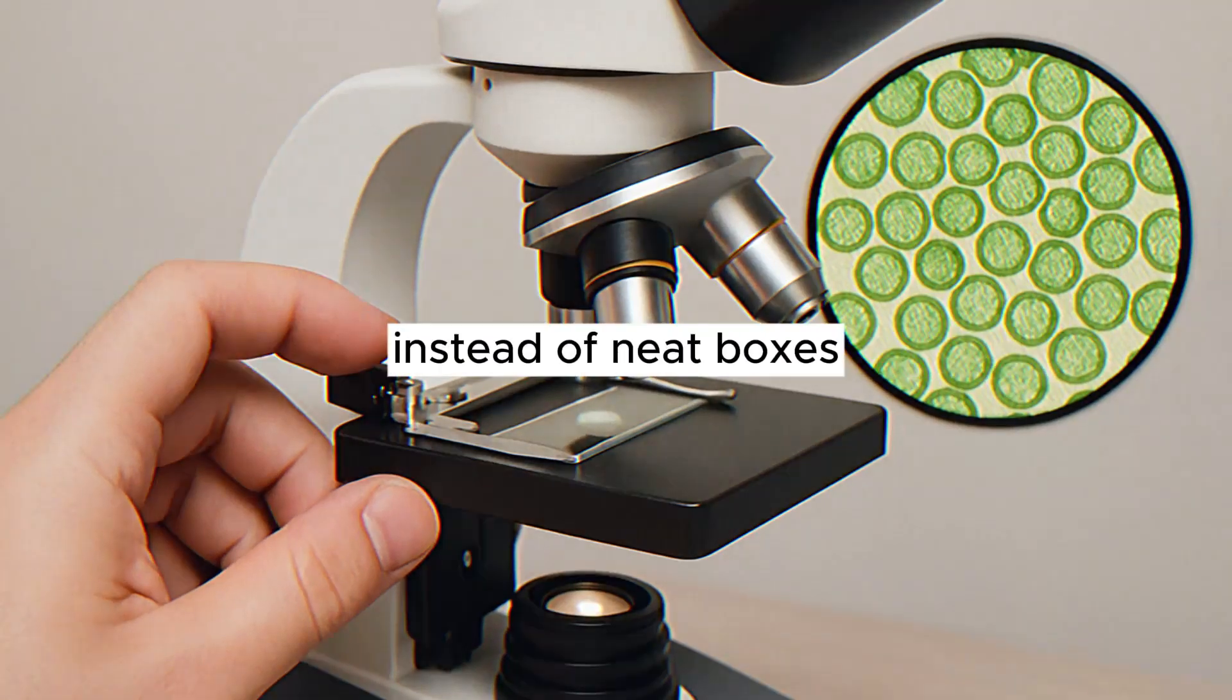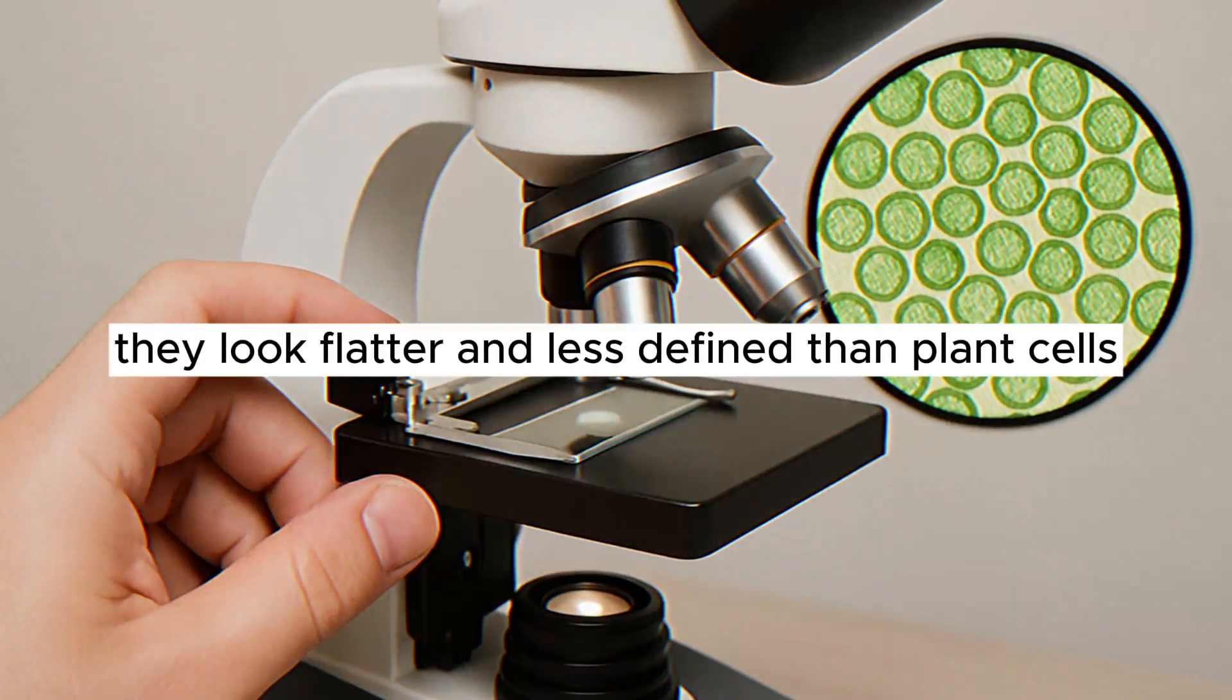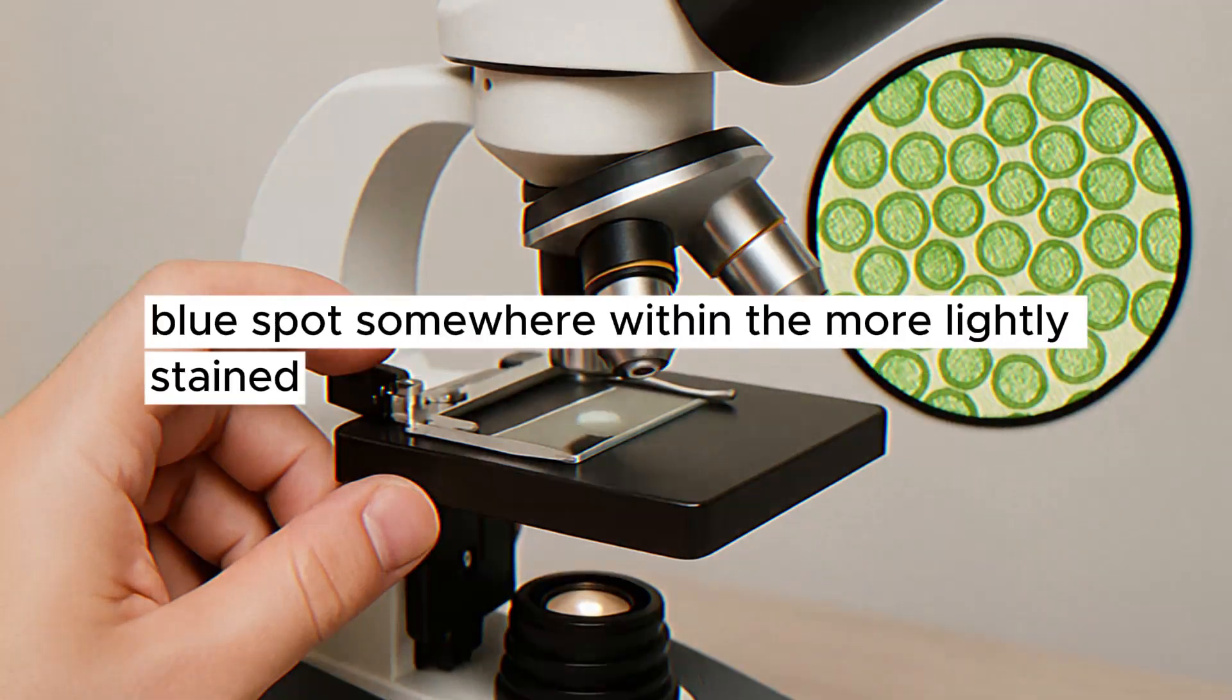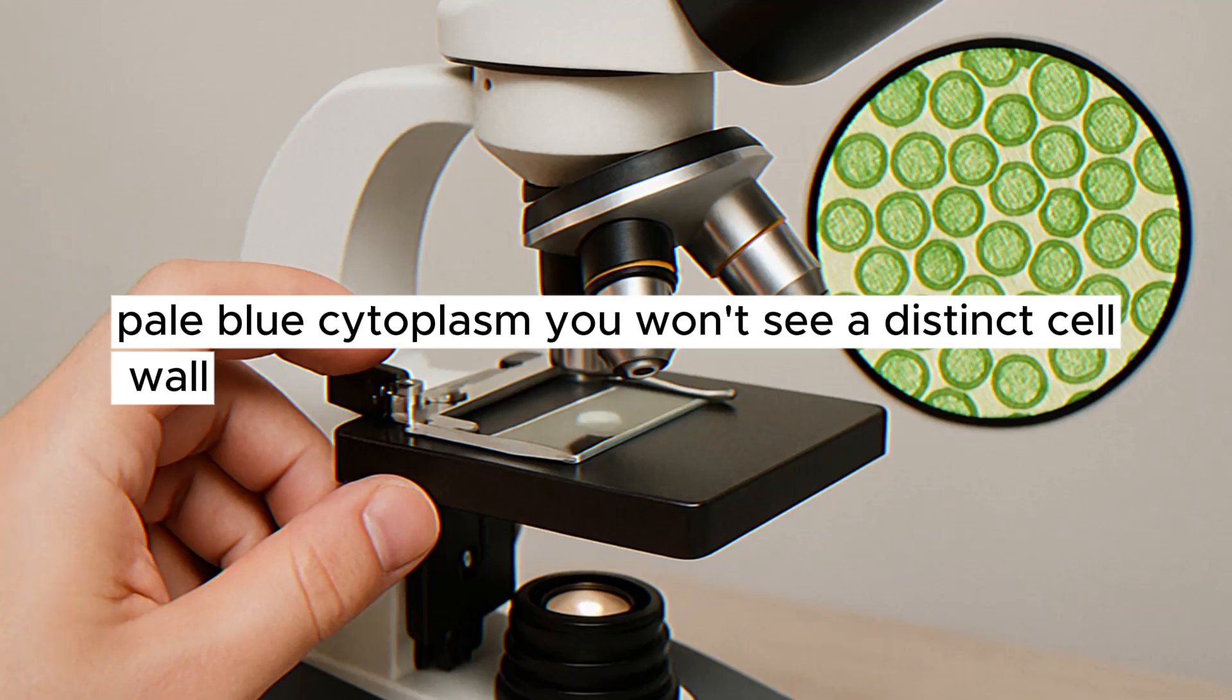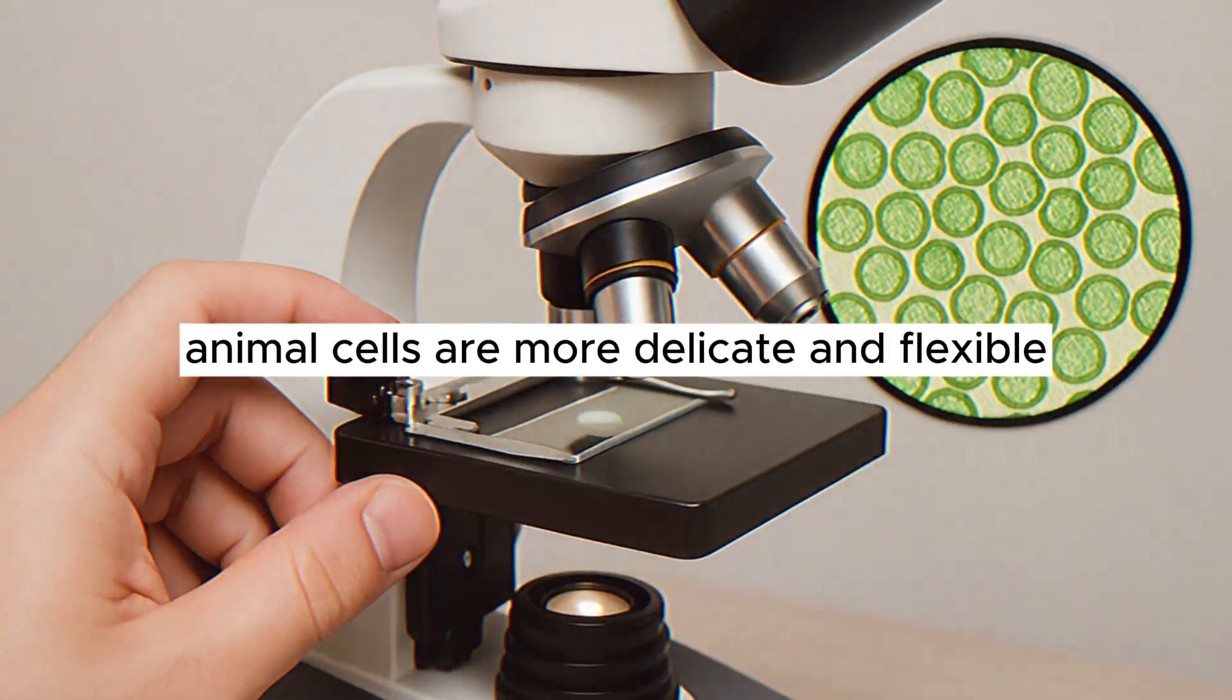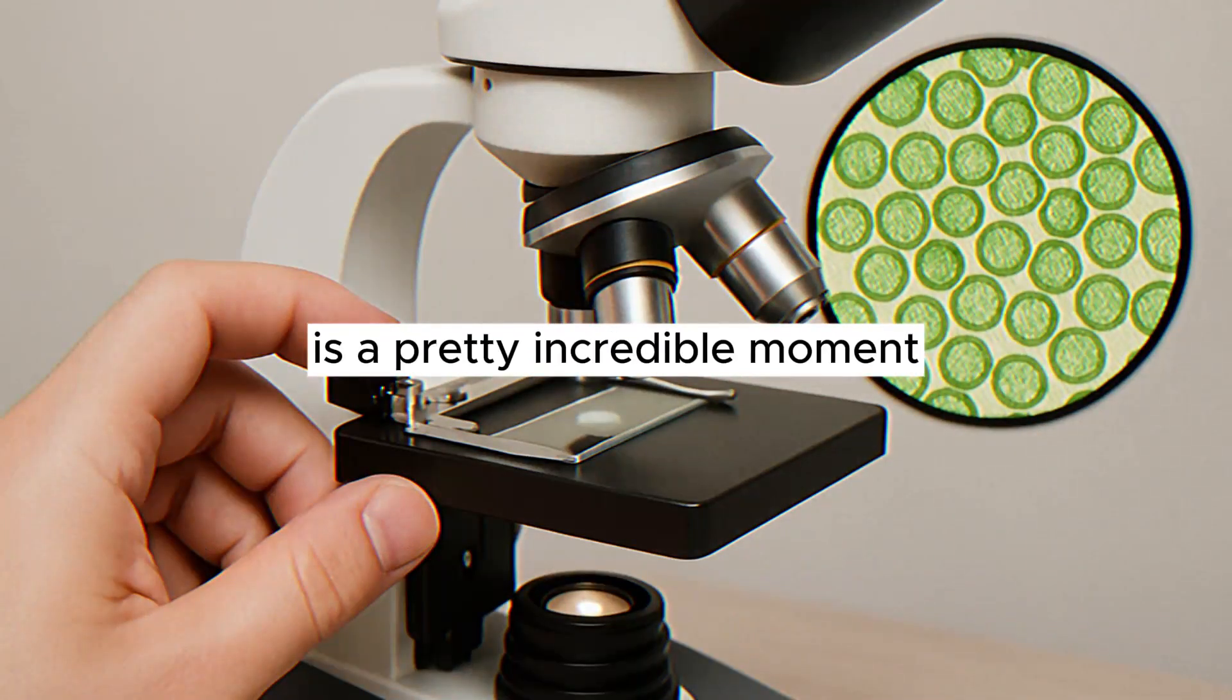Instead of neat boxes, you'll see irregular, blob-like shapes scattered about. These are your cheek cells. They look flatter and less defined than plant cells. The methylene blue stain will likely make the nucleus stand out as a dark blue spot somewhere within the more lightly stained, pale blue cytoplasm. You won't see a distinct cell wall, just the outer boundary of the cell membrane. Animal cells are more delicate and flexible, which is why they don't hold that rigid box shape. Seeing the faint outline of your own cells is a pretty incredible moment.